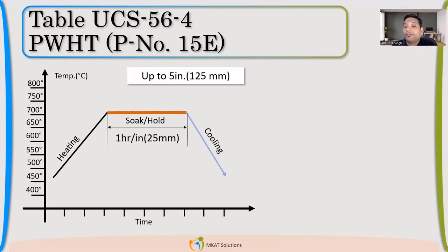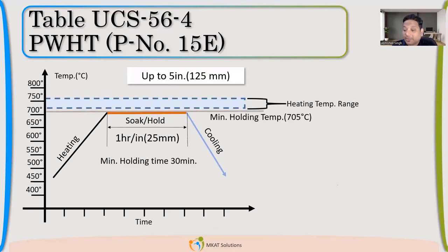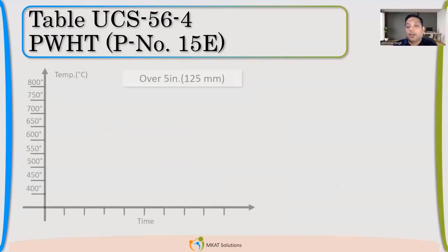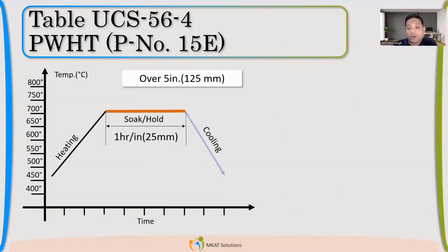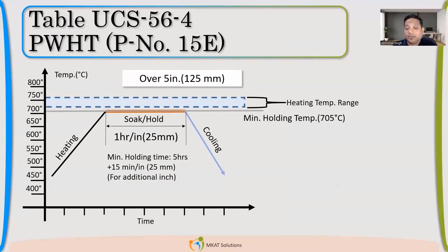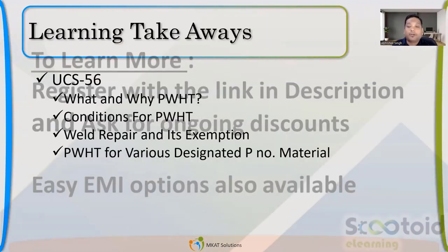Now the next table for P-15. P-15 is for what? It's 9% chrome material. So temperature here is 705 degrees, that is the holding temperature. The soaking time is same, 1 hour per inch. For over 5 inches again same thing: 5 hours plus 15 minutes for each increment of inch.